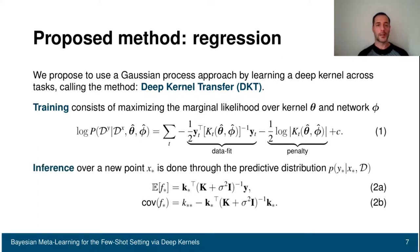At inference time, when we get a new task or a new data point, what we do is estimate the predictive distribution that has a closed form expression. For each point, we get a mean and a variance, with the variance representing the confidence in our prediction.